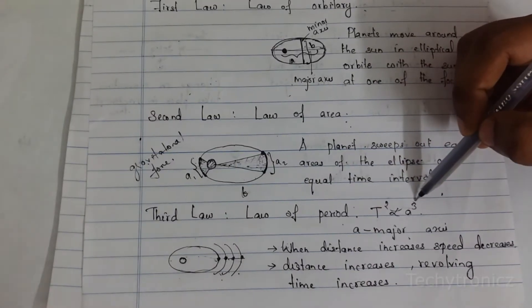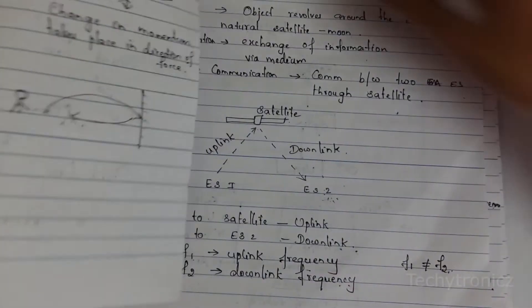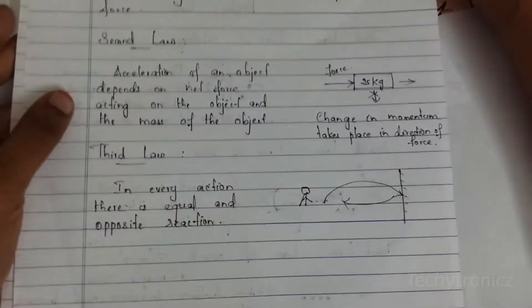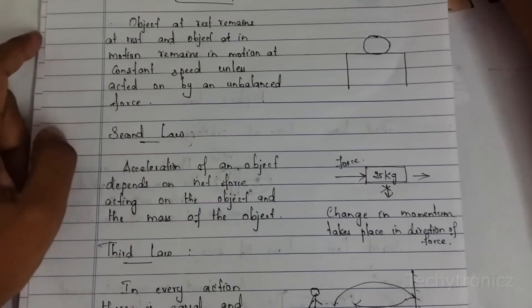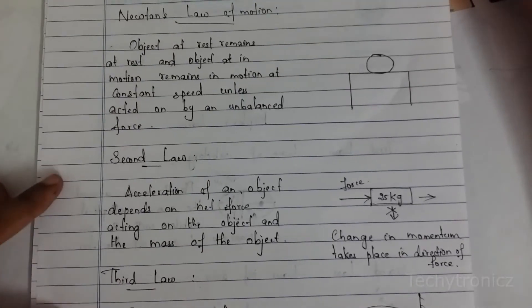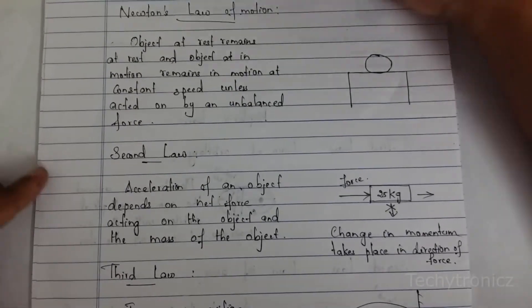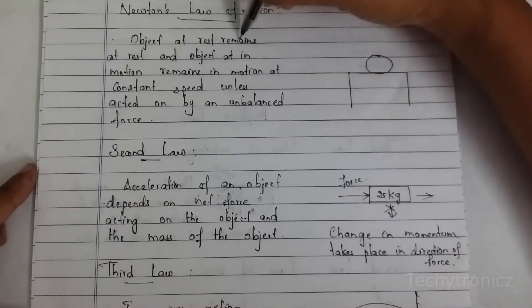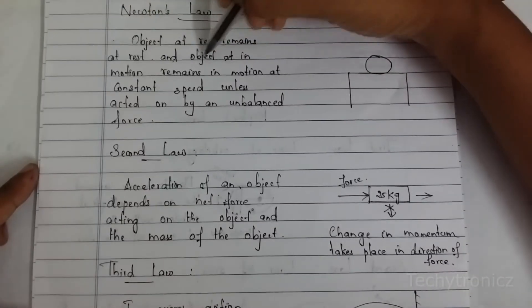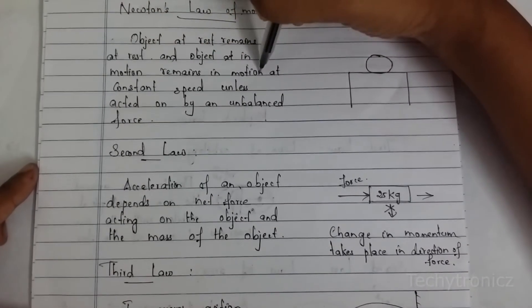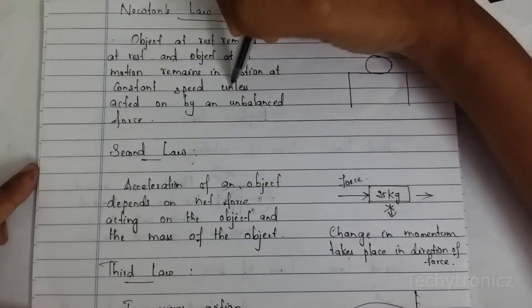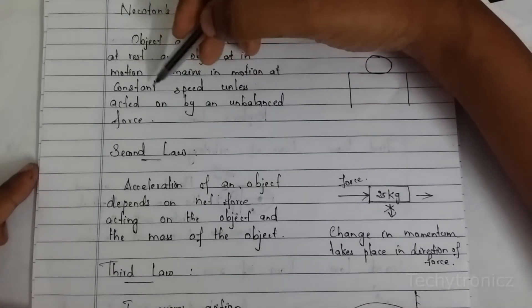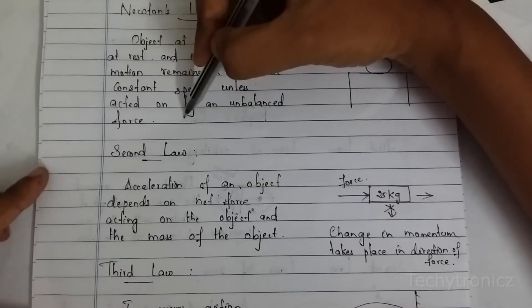T² is directly proportional to A³. Next topic: Newton's laws. Newton's laws — there are three laws of motion. The first law states: an object at rest remains at rest and an object in motion remains in motion at constant speed unless acted on by an unbalanced force.